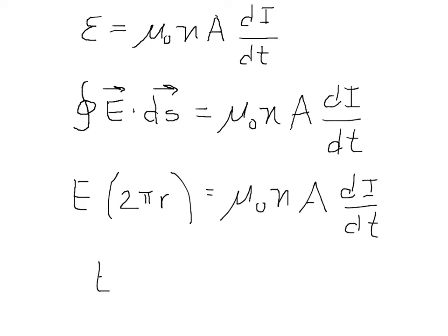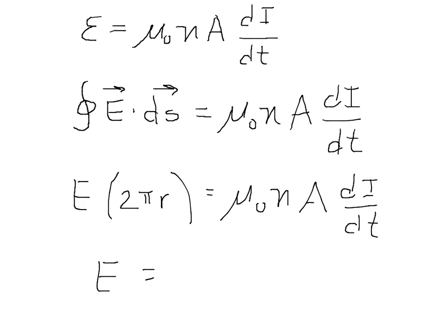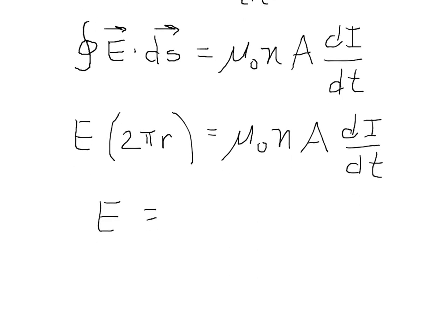And I have just one more thing to do, and that is to solve for E by dividing by 2 pi R. So we get mu naught, little n, A, di dt, all divided by 2 pi R.